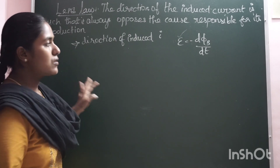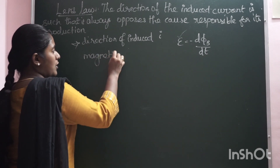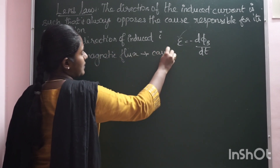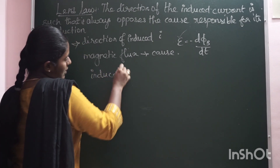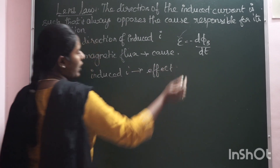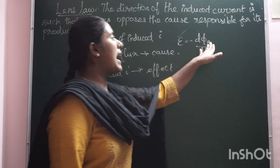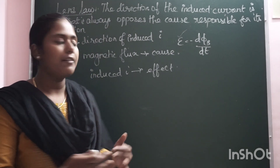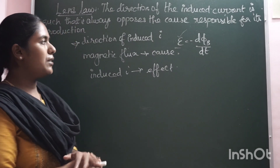So what do we say about magnetic flux? Magnetic flux is the cause. The induced current is the effect. So, magnetic flux is the cause and the induced EMF and induced current are produced as the effect.